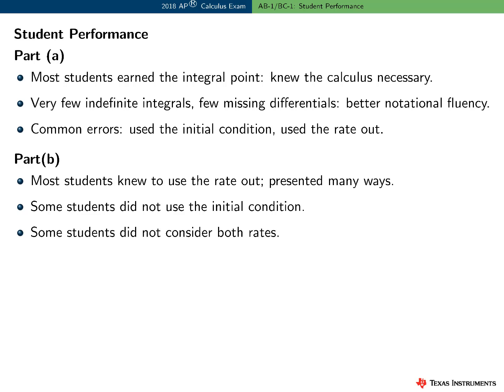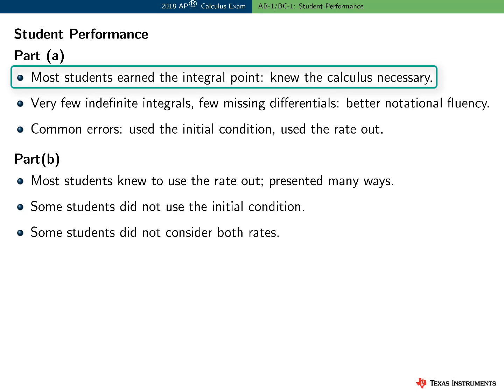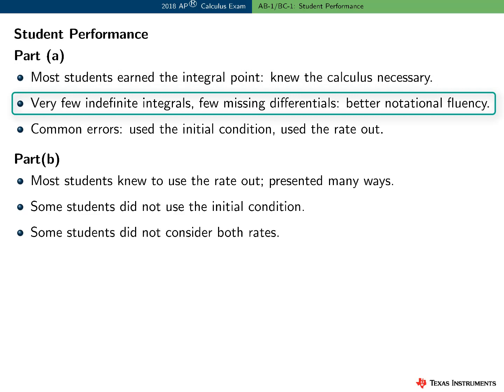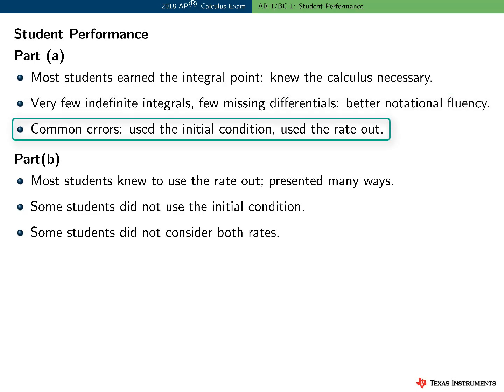Here are some general comments about student performance. In Part A, most students earned the integral point — they knew the calculus needed and wrote the correct definite integral. There were very few indefinite integrals and few missing differentials, which is a good sign. Students seemed to be exhibiting better notational fluency. Some common errors included incorrectly using the initial condition or the rate out in some manner.